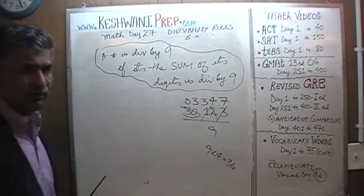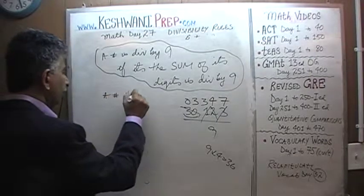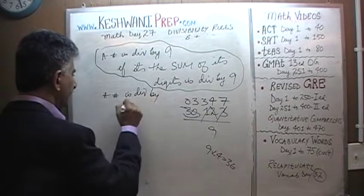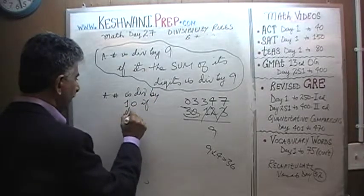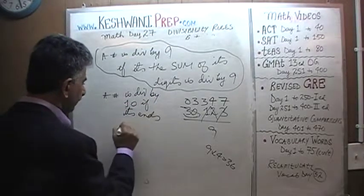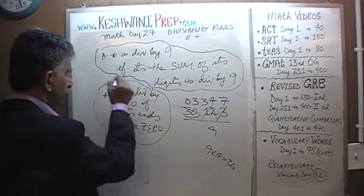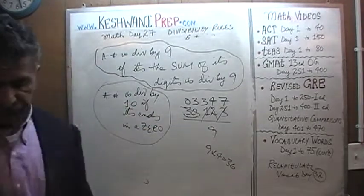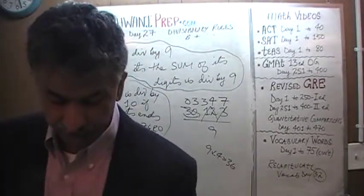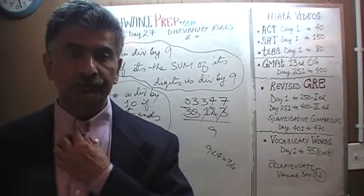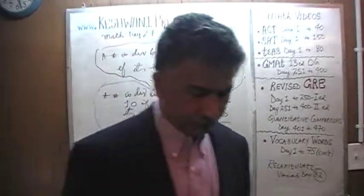How do we know if a number is divisible by 10? It's very simple: a number is divisible by 10 if it ends in a 0. If the last digit is 0, then it's divisible by 10 — obviously, because it's a multiple of 10. That's all. I'll see you tomorrow — okay, bye now.